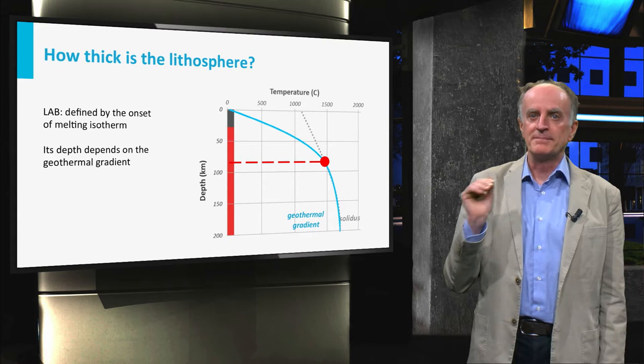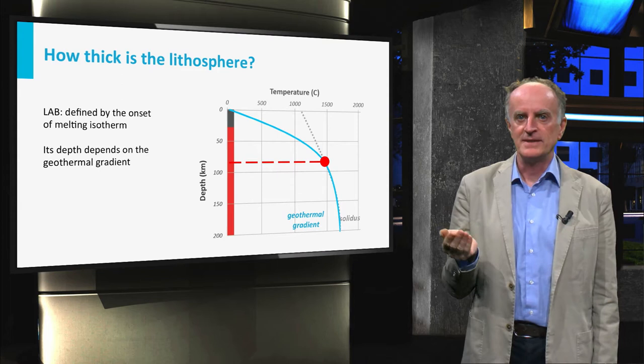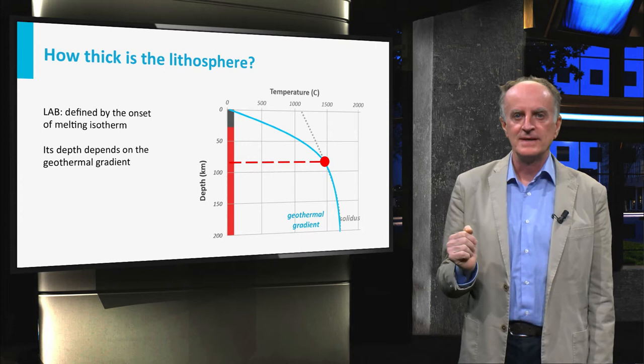The depth of this isotherm and thereby the thickness of the lithosphere depends on the geothermal gradient. In the case shown in the slide, the lithosphere is around 90 kilometers thick.